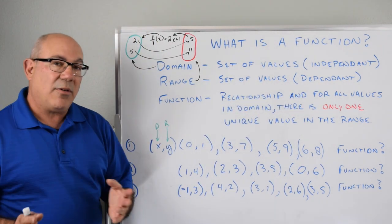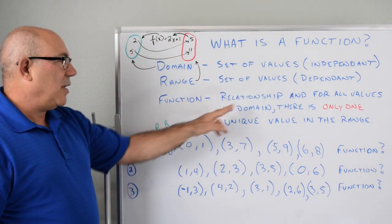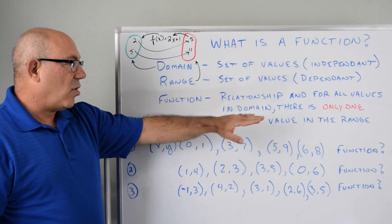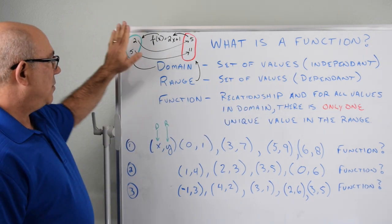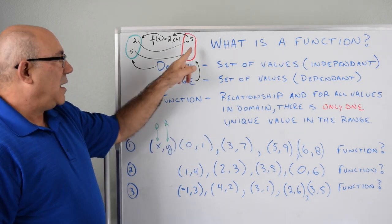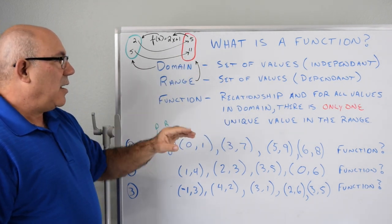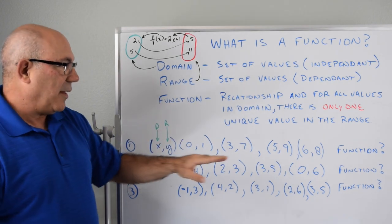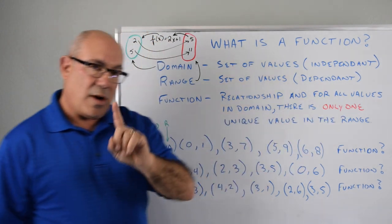And we know we have a function if and only if the relationship for all the values in the domain, which would be these, there is only one value, one unique value in the range. So that's a very key point. That's why I made it in red. So only one value.